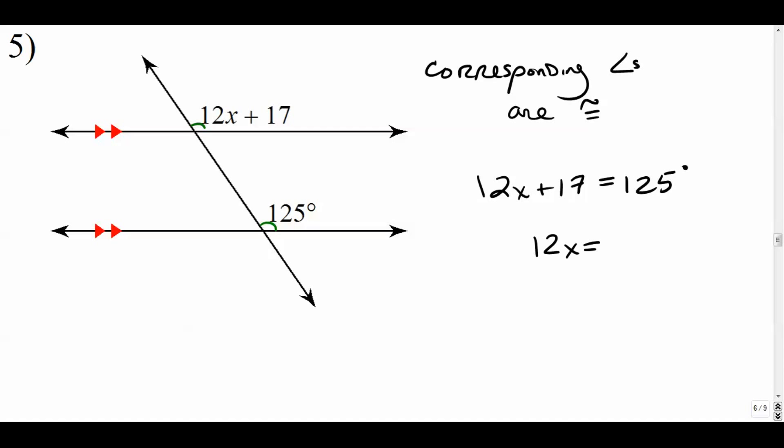We're going to subtract 17 and we get 108, I think. And we'll divide by 12. So 12 times, what's 12 times 9? That's 90 plus 18. Yeah, that's 108. So that works. X is 9. And again, to check that, just plug it back in here. 12 times 9 is 108. Plus 17 is 125. Cool.